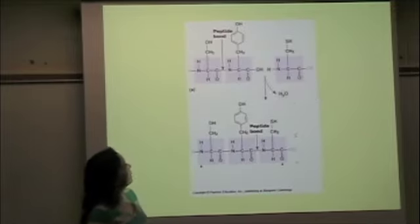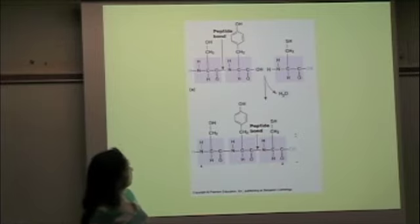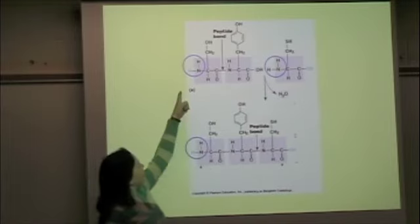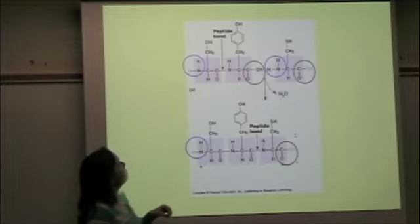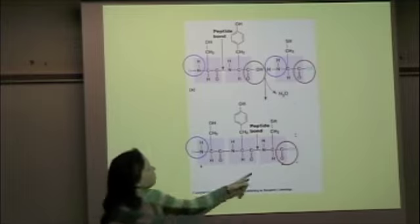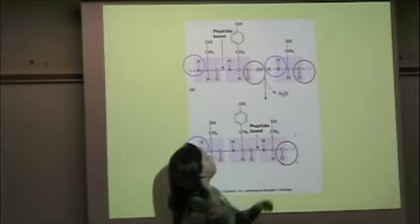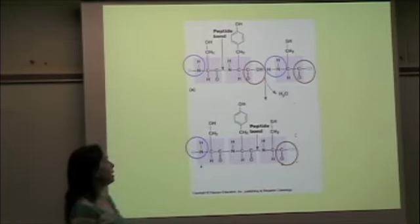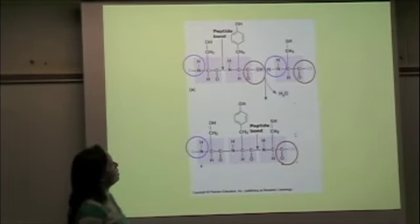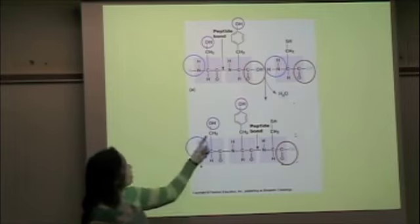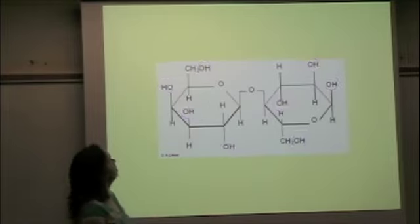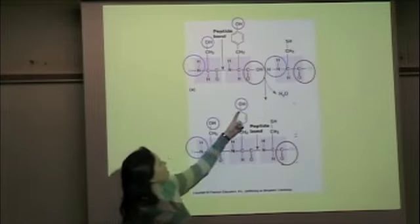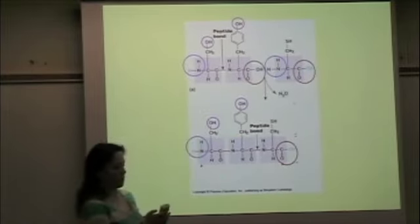Here we have some amino acids joining together. We have several different functional groups again. We have several amino groups, N with the hydrogen. Okay, so any time you see the N, look for an amino group. We also have several carboxyl groups. Carbon double bonded to oxygen, single bonded to an OH. And then additionally, we have a couple of the hydroxyls circled in purple. Let's go back to that one for a minute. Okay, so now we can see the hydroxyls, the OH.